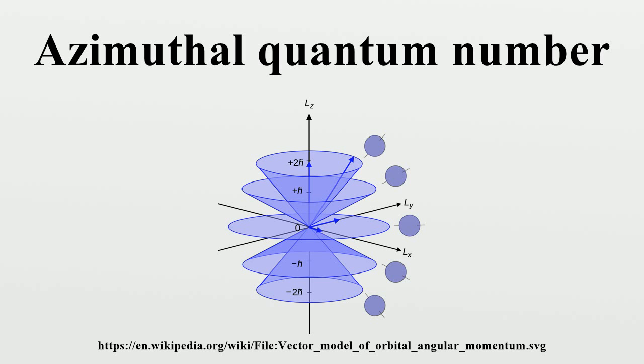Each of the different angular momentum states can take 2l+1 electrons. This is because the third quantum number m runs from minus l to plus l in integer units, and so there are 2l+1 possible states. Each distinct n-l-m orbital can be occupied by two electrons with opposing spins, giving 2(2l+1) electrons overall.